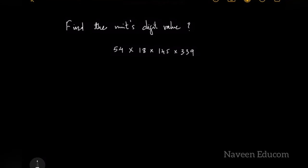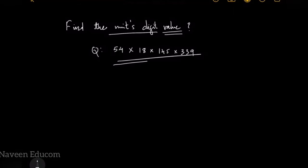So here what we have to find is the unit's digit value of the given question. Our given question is 54 × 18 × 145 × 339, so this is our question.